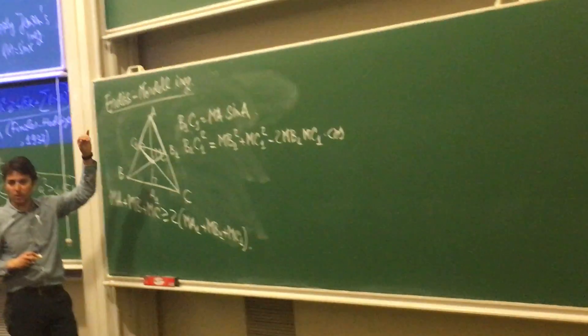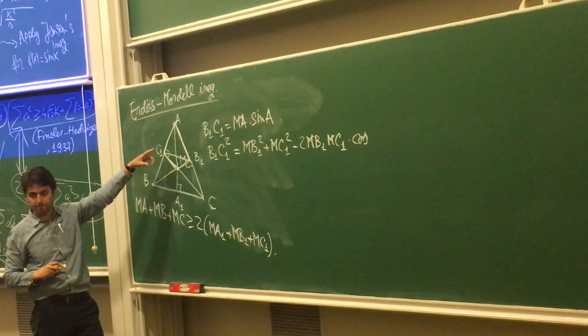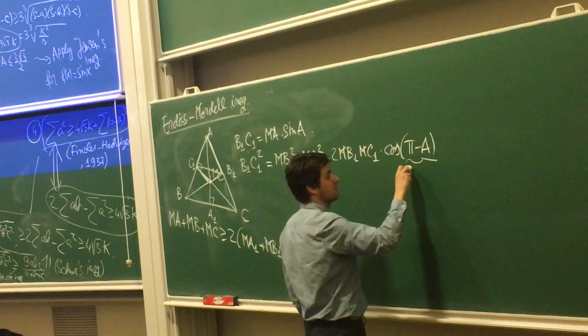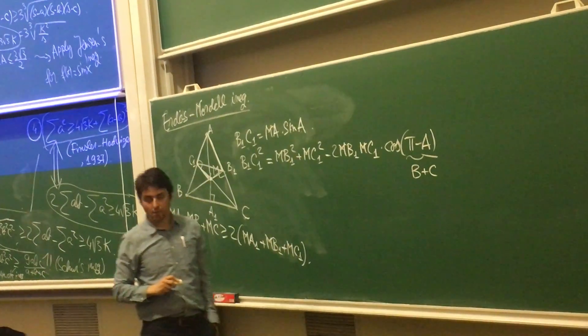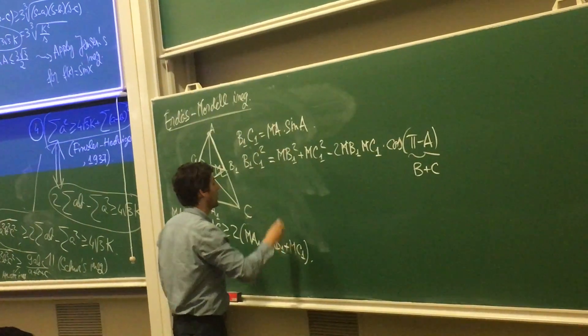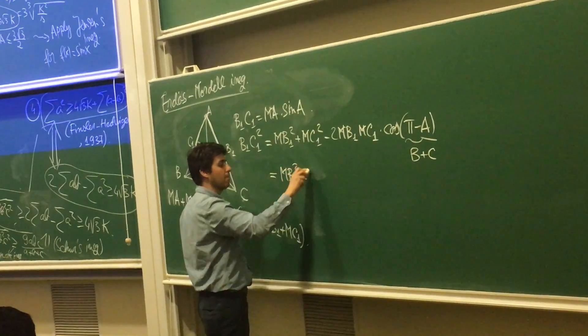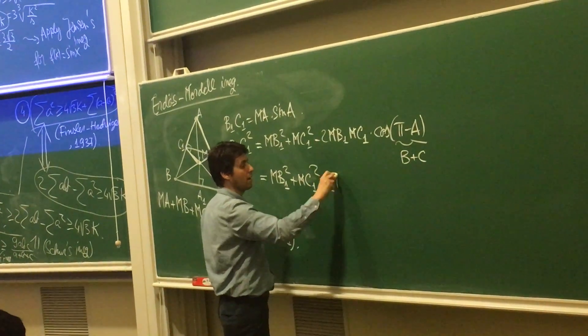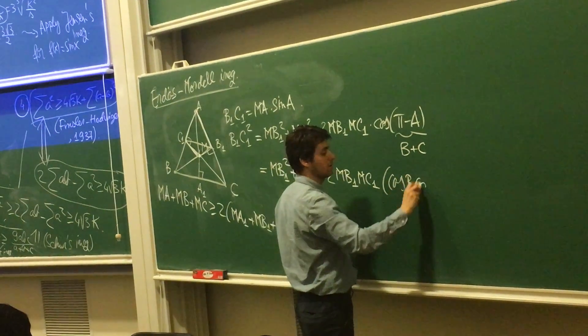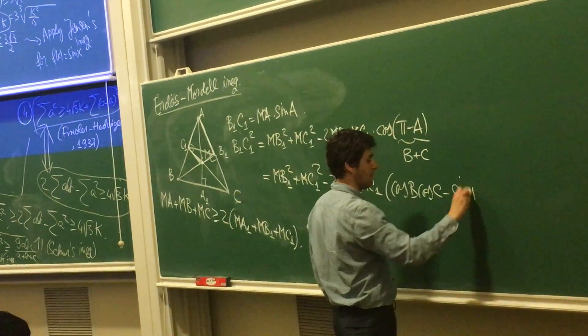Cosine of what? So that will be, eventually after you do all this, it will be cosine of π minus A, right? Which is B plus C. So it's MB1 squared plus MC1 squared minus 2·MB1·MC1, and now this is cosine B cosine C minus sine B sine C.